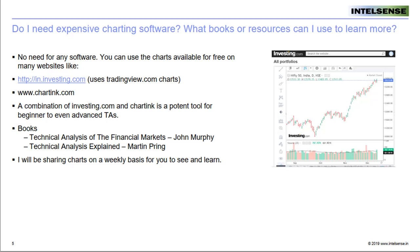I have given names of two books — I have purposely left out what is considered to be the Bible, which is Edwards and Magee's book. I've recommended John Murphy and Martin Pring primarily because both of them have written their books in very simple language with very clear and easy to understand charts, and they've covered the entire gamut of technical analysis required to begin with. Both of these books are very, very good. Even the tutorials available on Investopedia are excellent, and I think Zerodha's Varsity also has a very, very good technical analysis tutorial. So those are good places to get started.